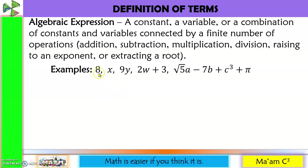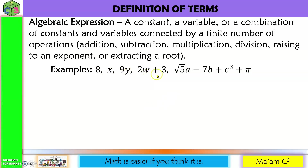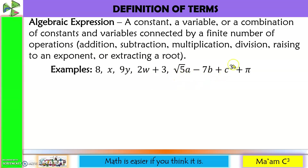Examples. We have here a constant, a variable, a combination of a constant and a variable. We have here a combination of variable and constant connected with an operation such as addition, subtraction, multiplication, raising to a power, or extracting a root. These are algebraic expressions.